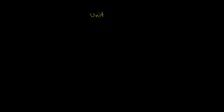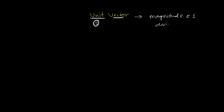So what is a unit vector? The name itself is very clear — 'unit' means one. Vectors already have magnitude and direction. Those vectors which have magnitude equal to one, and have a direction, are called unit vectors.